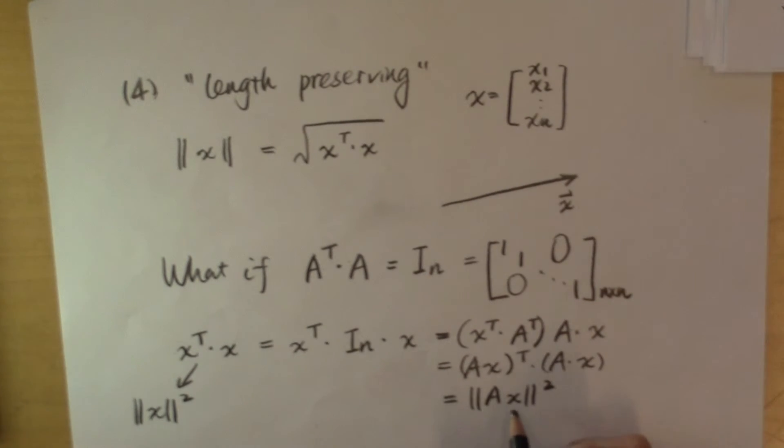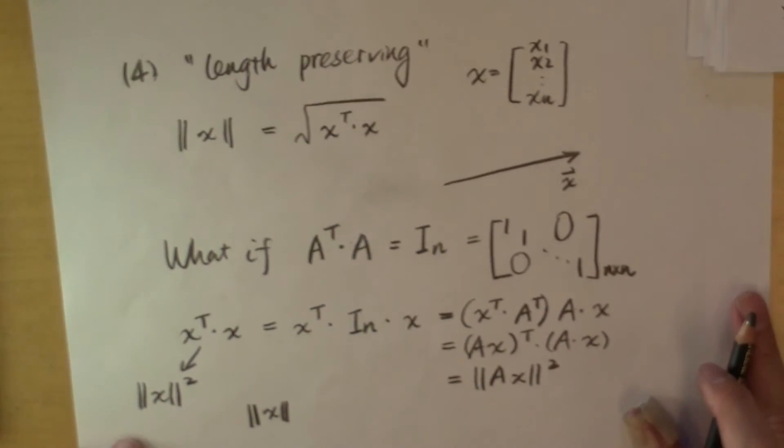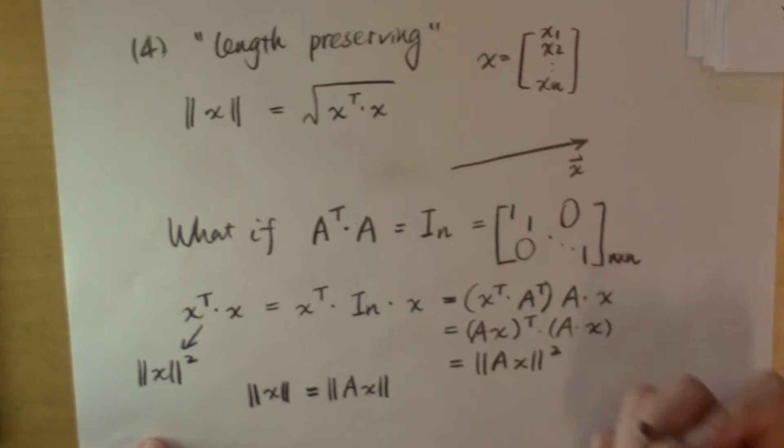And because the Euclidean norm is a length which is positive, the length of the vector x is going to equal to the length of the vector A times x.